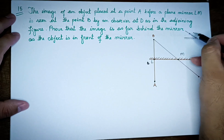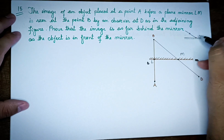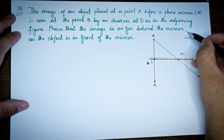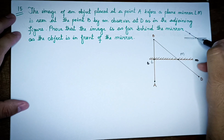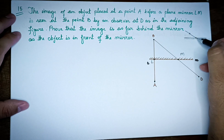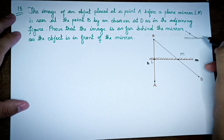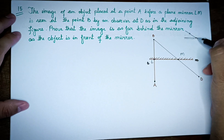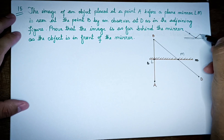The incident ray AM hits the mirror. If we reflect the mirror automatically, we are able to see the reflected ray.